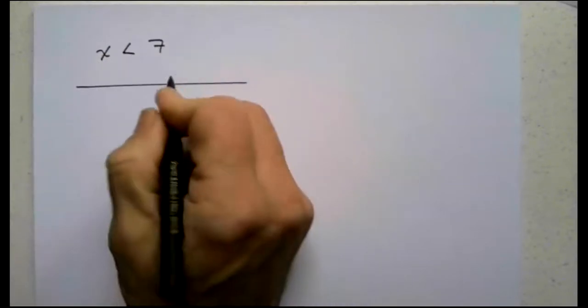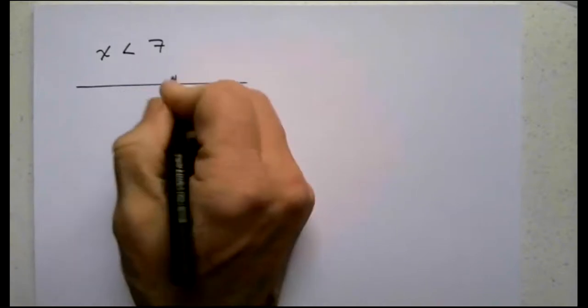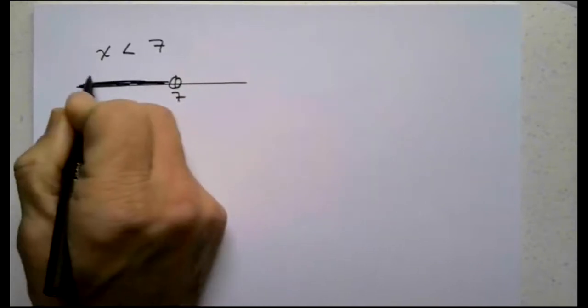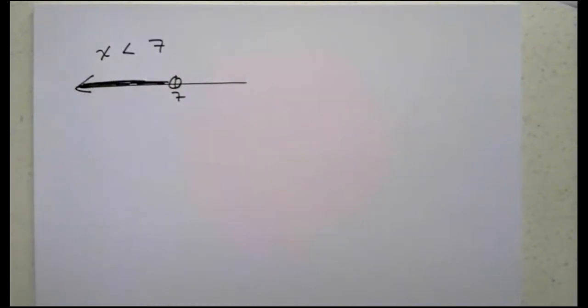So I'd like to draw a number line. It's less than so we don't include the point, and it's less than so 6, 5, 4, 3, 2, 1, 0, negative 1, negative 2, negative 3, etc. would be included in that set.